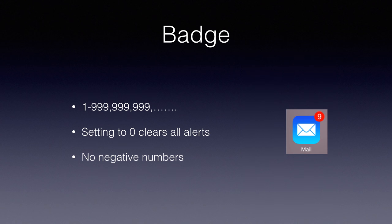Badge: you can set a badge which shows a number on your app icon. You can have anywhere from 1 to int max digits, but don't go beyond about 10,000 to 100,000 at most. If you set the badge to 0, it'll dismiss all the alerts for that particular app. You also can't have negative numbers.